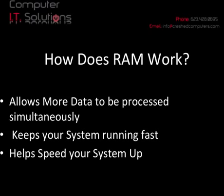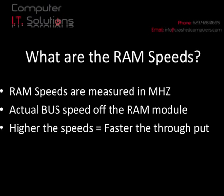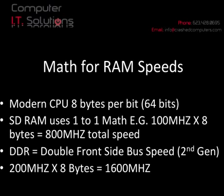It's the same concept when working on multiple applications — with more RAM you can run more at any given time. With less RAM, there are fewer things you can work on at once, and your system is actually going to get bogged down with processes. Now, all RAM has its own speed — there's a certain rate at which the bus speed comes off the RAM module, and that affects how fast your RAM processes information. The higher the speeds, the faster the throughput, the faster that information is accessed and processed by your processor. Let's talk about the math of these RAM speeds.